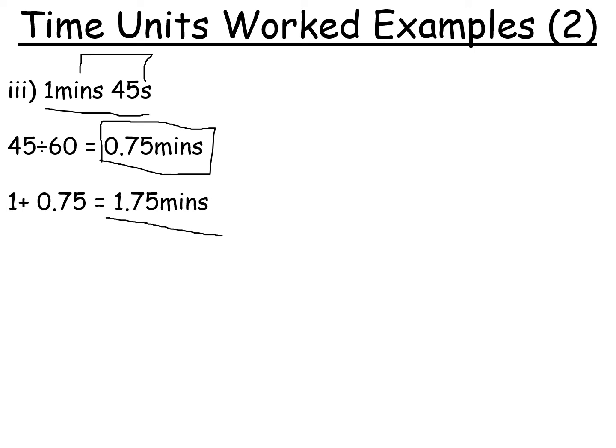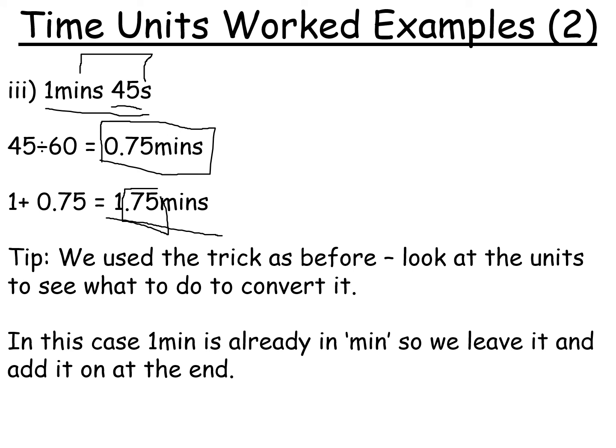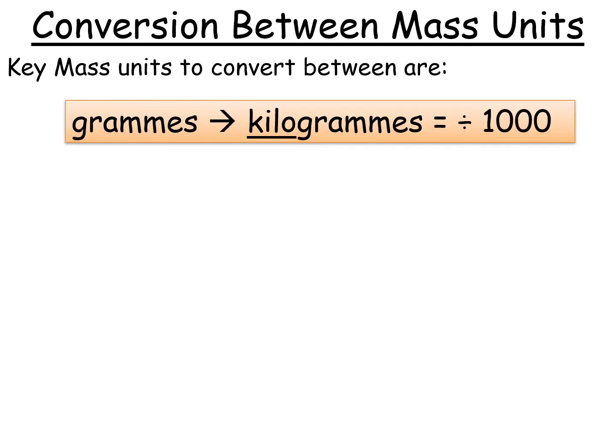And notice how you might think, well, is this less than what we had before? Well, remember, 0.75 is less than 1. So that's less than 45. So we're on the right track, folks. So we're using the same trick as before, and we're just leaving the minutes at the end because it's already in the correct units.